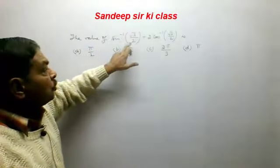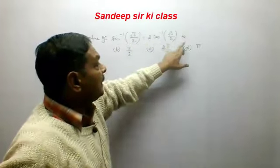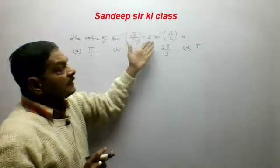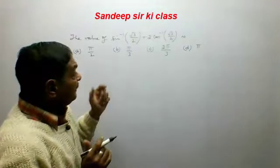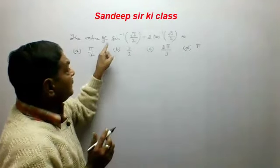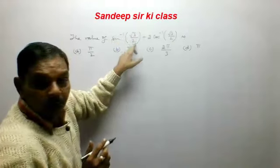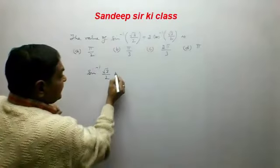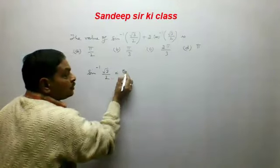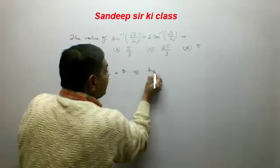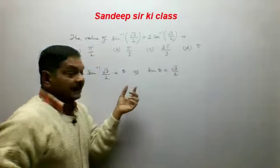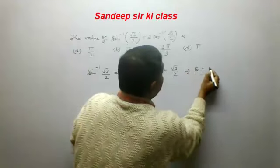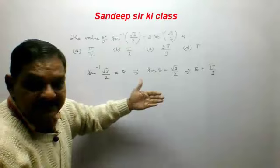The question asks for the value of sin⁻¹(√3/2) + 2cos⁻¹(√3/2). We observe that sin⁻¹(√3/2) can be converted to an angle: if sin θ = √3/2, then θ = 60° = π/3. So sin⁻¹(√3/2) = π/3.